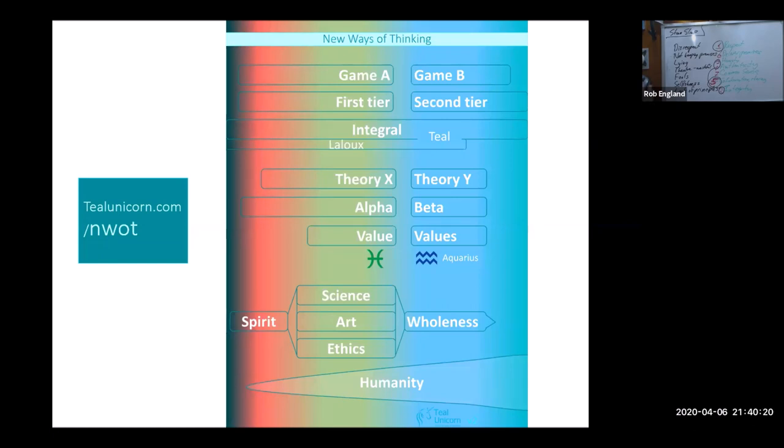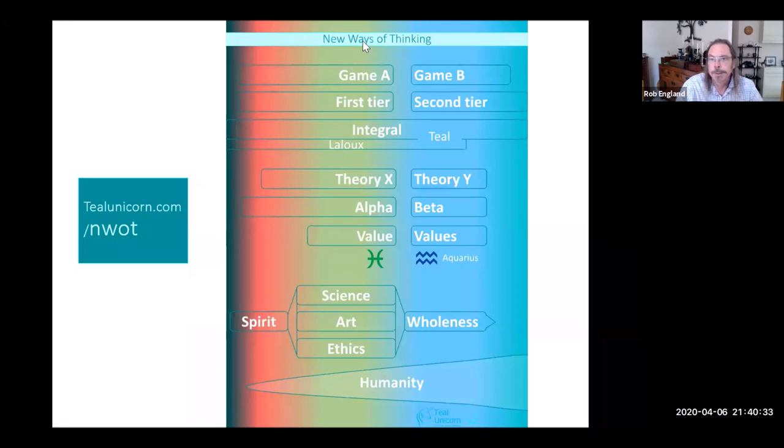Here's this transformation going on in the world. When we go right down to the deep ideological stuff, then there are models out there that if you don't know about, you can go and study. And they're all summarized on tealunicorn.com in what? New ways of thinking. There's an article there that summarizes this slide.